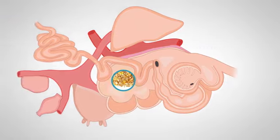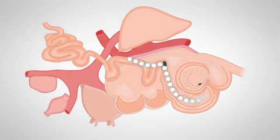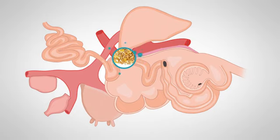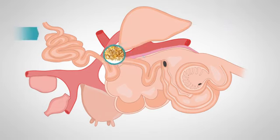If some starch is not digested in the rumen, it passes through to the small intestine, where the dairy cow only has a limited capacity for digestion and absorption. Therefore, only a small proportion of any undigested starch is absorbed from the small intestine and contributes to the glucose pool in the liver. The remainder, like undigested structural carbohydrates, is excreted in the dung.